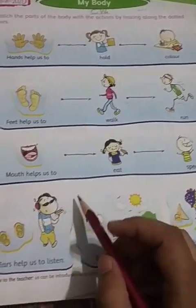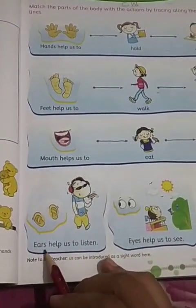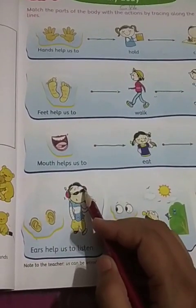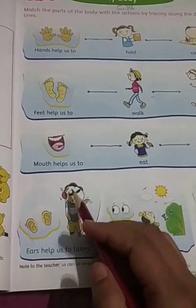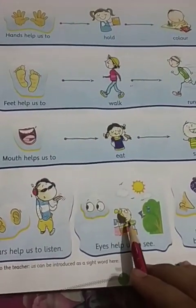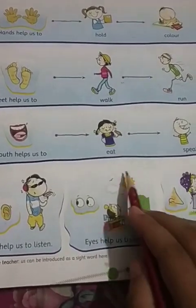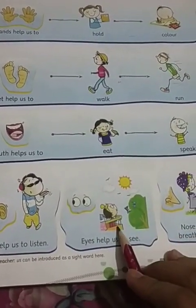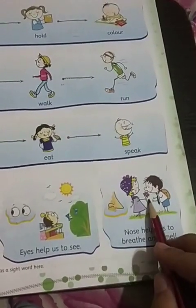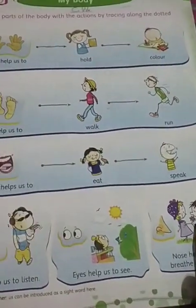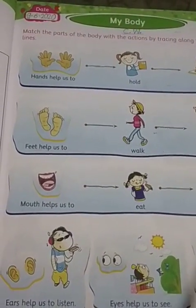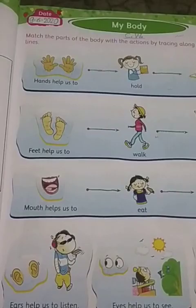We can also eat. And ears help us to listen — look, the boy is listening to music, so ears help us to listen. And eyes help us to see — look, the girl is seeing the sun and the birds. And lastly, this is the nose, and the nose helps us to smell things. So now we are going to do an exercise related to this topic, 'My Body.'